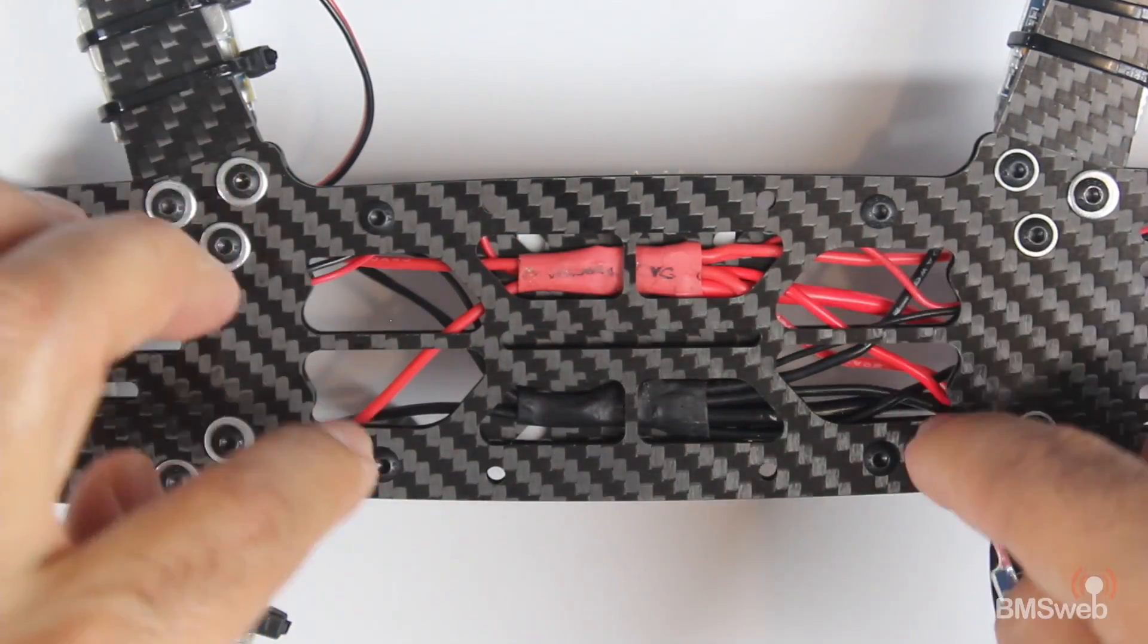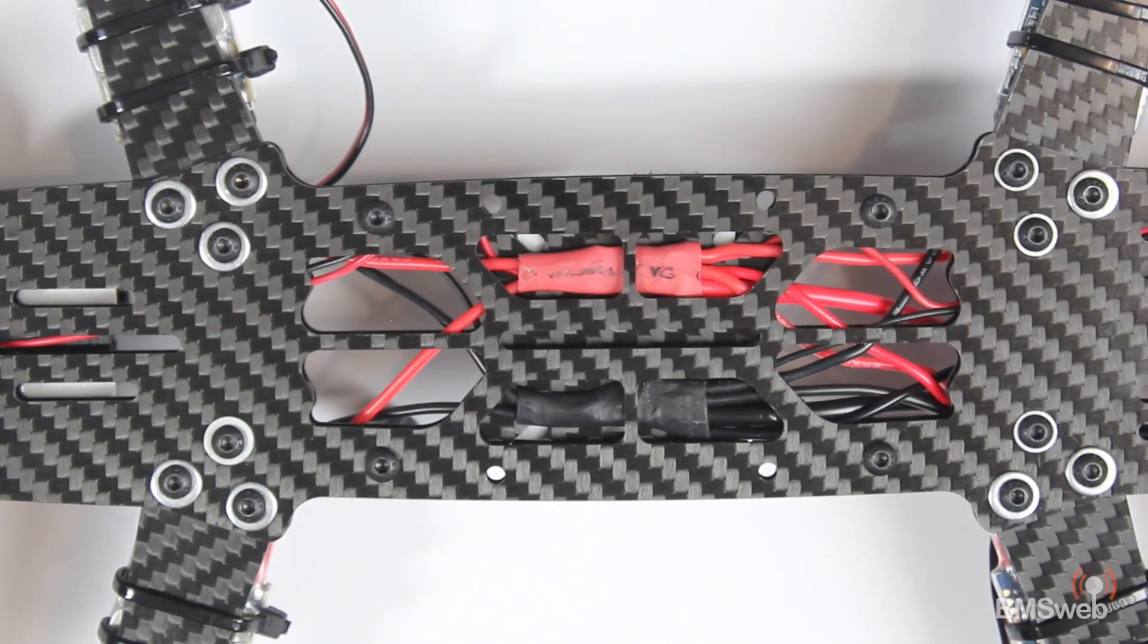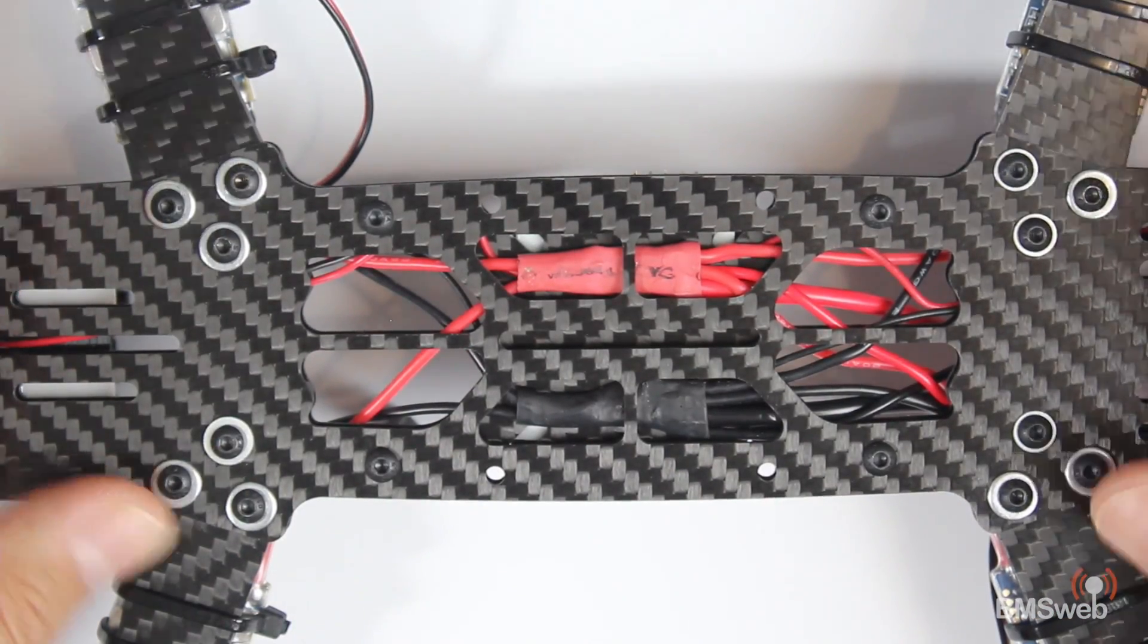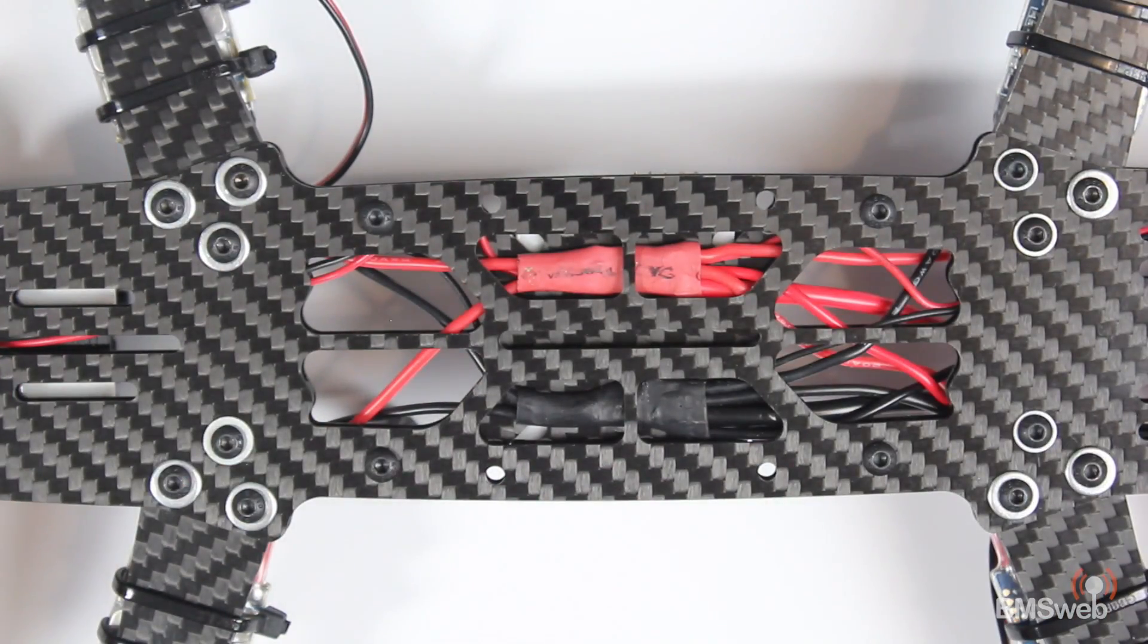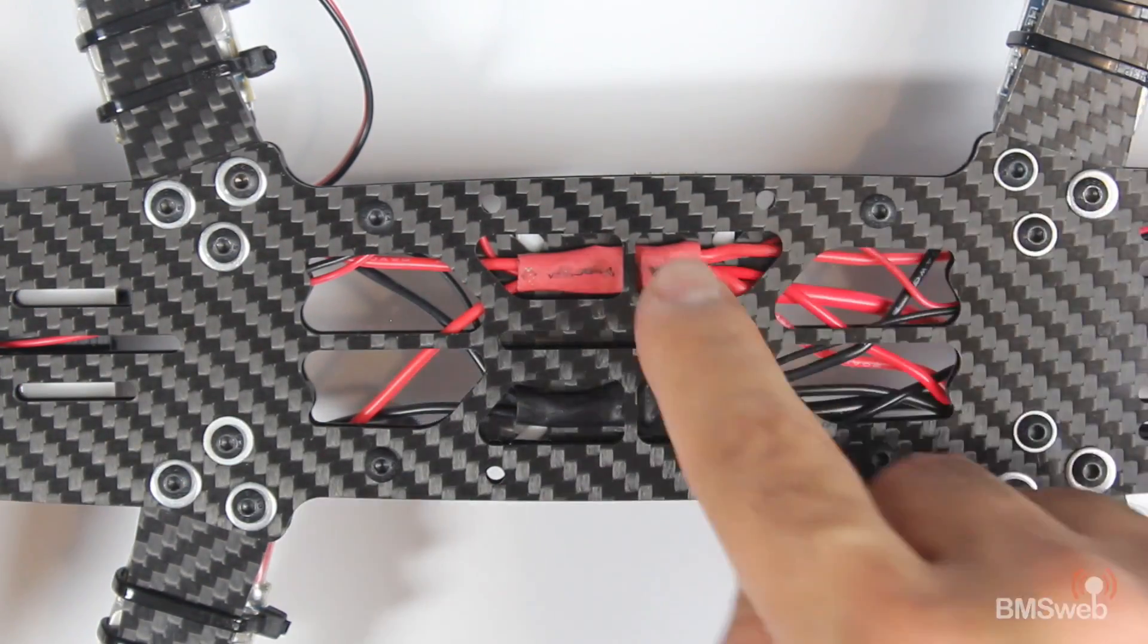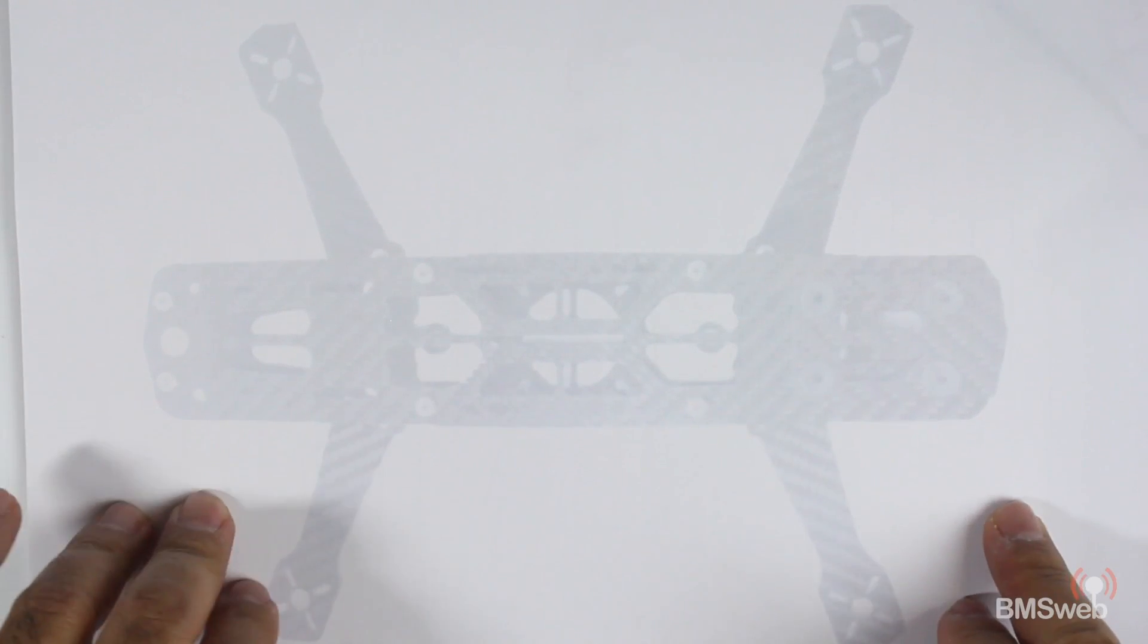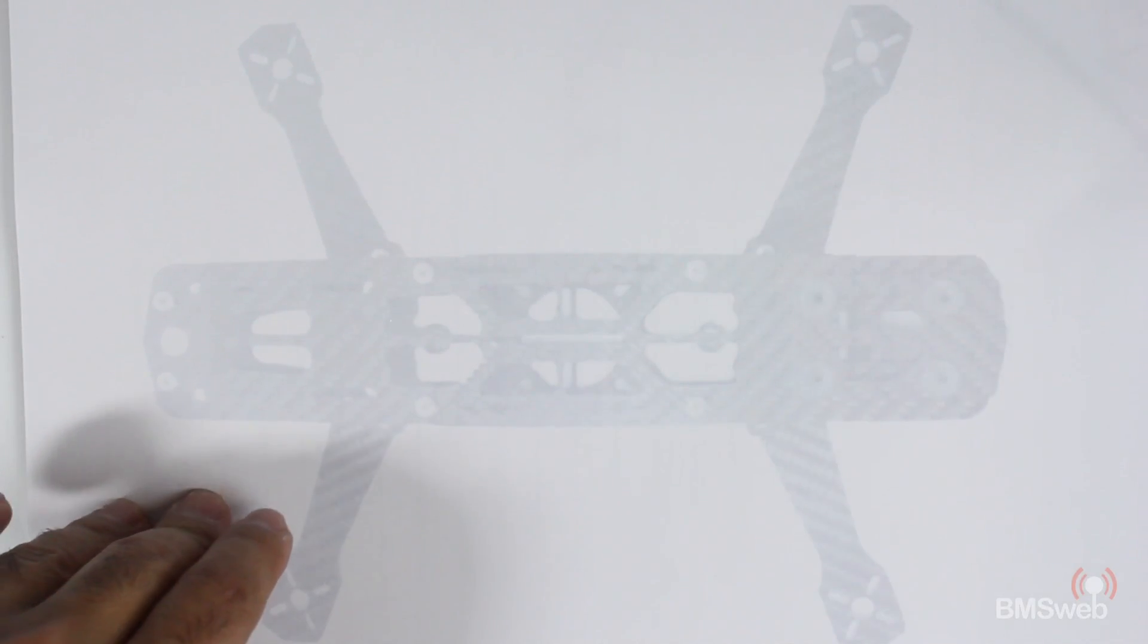They're basically tucked in there, and then through the holes the ESCs push through and mount onto the arms. I constructed this without the bottom plate on, and once I was happy with it I put the bottom plate on and closed everything up. I'm going to show you exactly how I've gone about doing this power distribution. This is just a silhouette of a CGX 250.